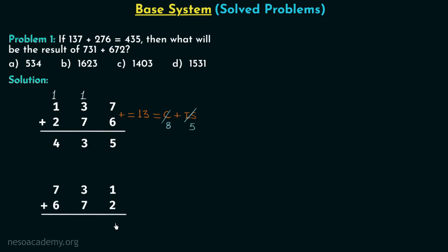Now we perform 731 plus 672 in the octal number system. 1 plus 2 equals 3; divided by 8 gives intermediate sum 3 and carry 0. Then 0 plus 3 plus 7 equals 10; divided by 8 gives intermediate sum 2 and carry 1. Then 1 plus 7 plus 6 equals 14; divided by 8 gives intermediate sum 6 and carry 1. Adding 1 plus 0 plus 0 gives 1. So the answer is 1623 and option B is correct.